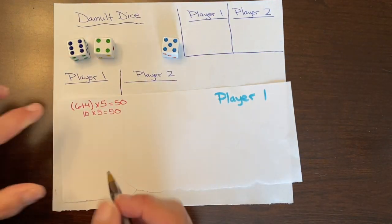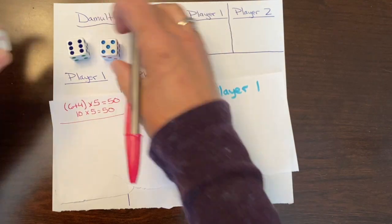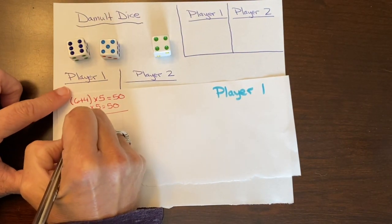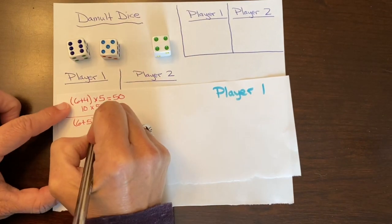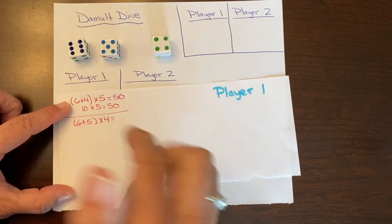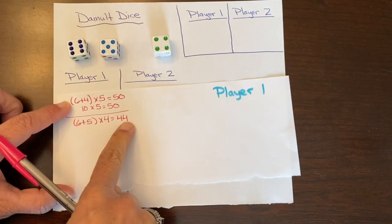Okay, so that was option number one. Let me draw a line here. So let's move these dice around. 6 plus 5, and then that is going to be times 4. 6 plus 5 is 11, and 11 times 4—those are always fun. I like multiplying things by 11. It's 44.